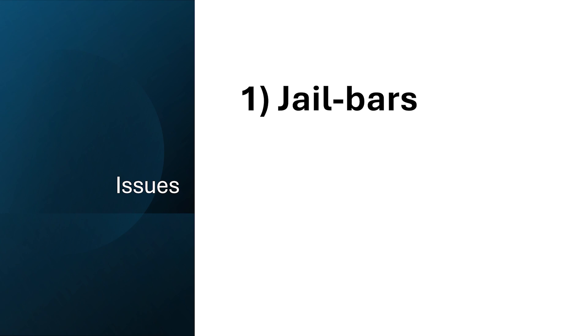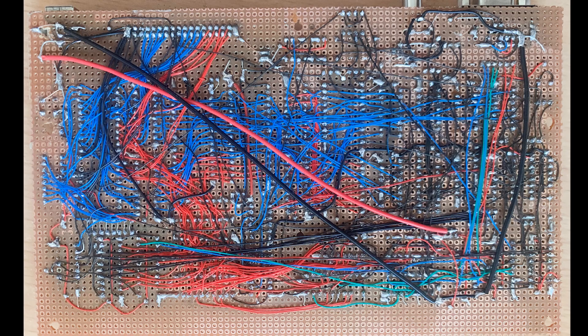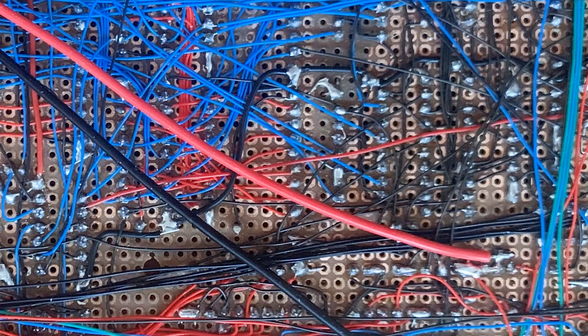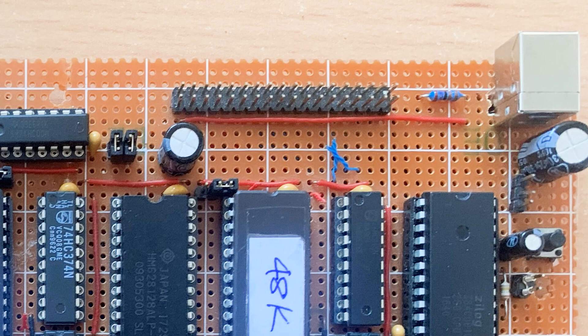If I built this on a printed circuit board, I'd use a four-layer board and dedicate one layer to power and one layer to ground. But obviously I can't do that with point-to-point wiring. Every chip has a decoupling capacitor, and I've spaced out some electrolytic capacitors around the board. I've tried different power supplies, but none of these tricks fixed it.